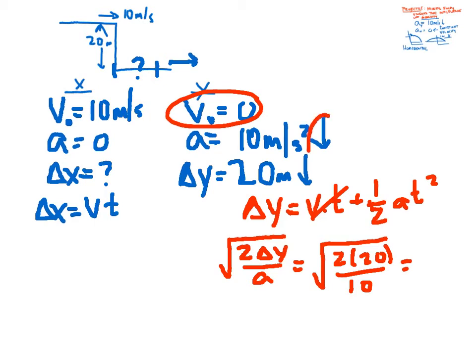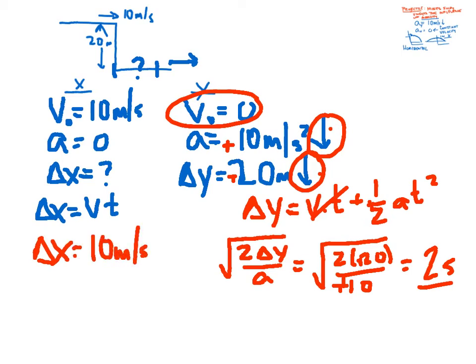Now these things are both pointing in the same direction. I could make them both negative. Then I'd have 2 times negative 20 divided by negative 10. But that's the exact same thing as making them both positive. As far as I'm concerned, as long as all of the directions in a problem are in agreement, we do not have to make anything negative. I usually leave it positive. This tells me that my time is 2 seconds. So if we come over here, my delta x is 10 meters per second times 2 seconds. Per second, seconds goes away. And I'm left with a delta x of 20 meters.